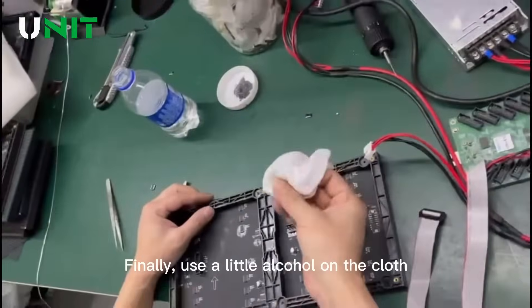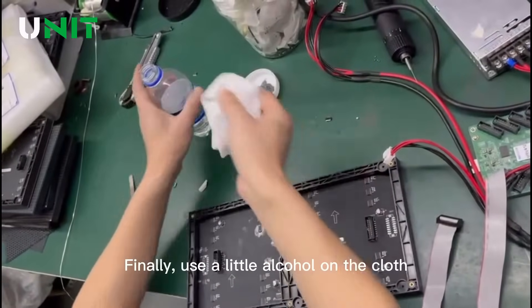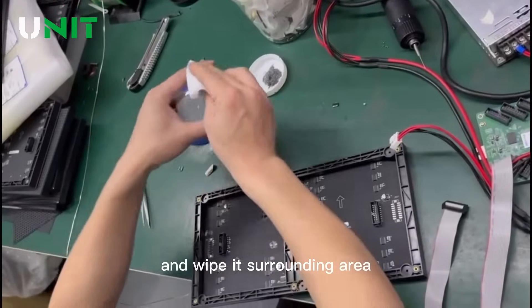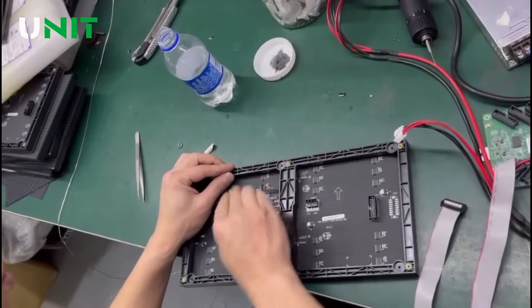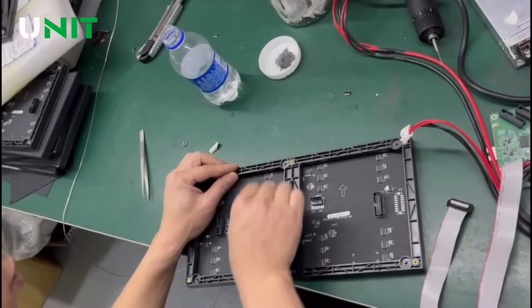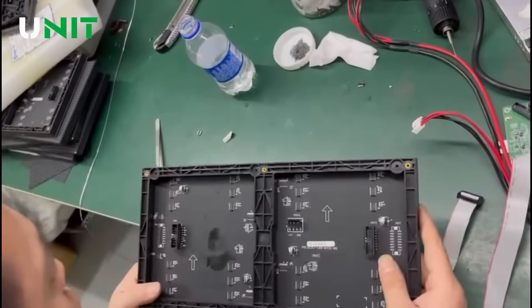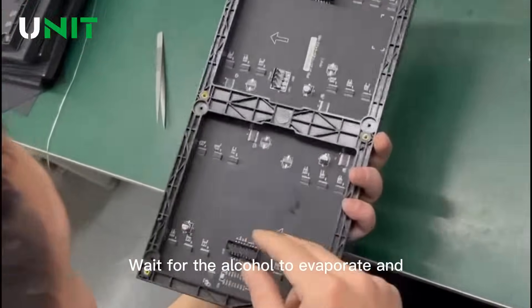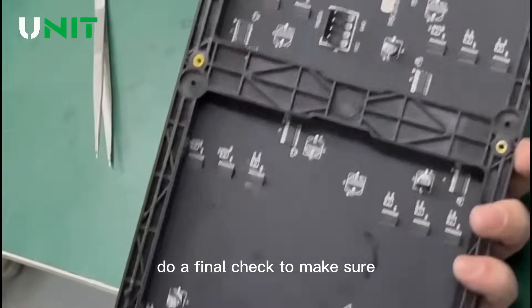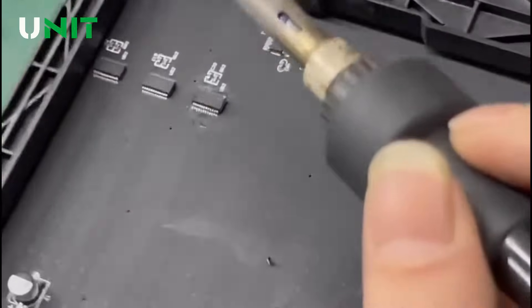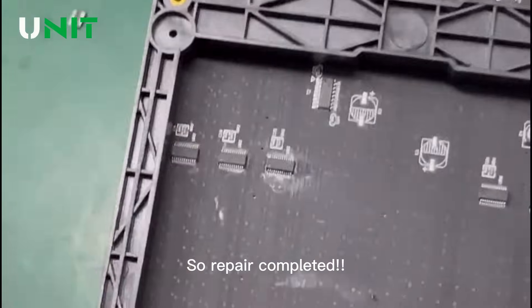Finally, use a little alcohol on the cloth and wipe its surrounding area. Wait for the alcohol to evaporate and do a final check to make sure there is no tin left around. Repair completed.